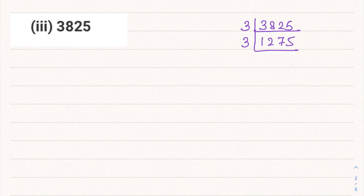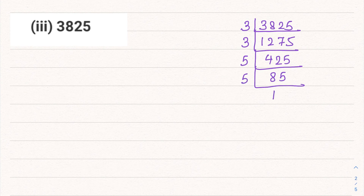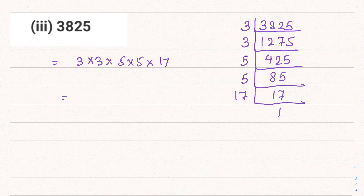Dividing 3825 by 3 repeatedly and then by 5 gives us: 3825 = 3 × 3 × 5 × 5 × 17. Here 17 is a prime number. So the factors are 3 × 3 × 5 × 5 × 17, which we can write as 3² × 5² × 17.